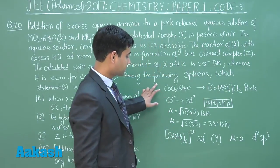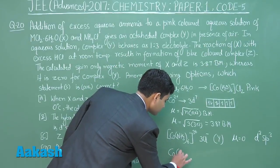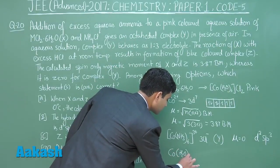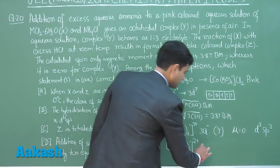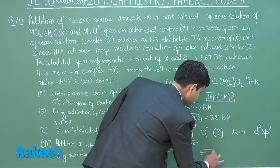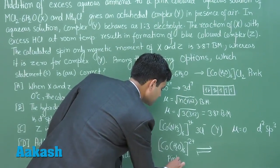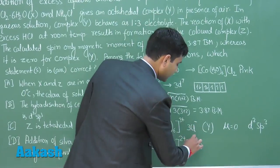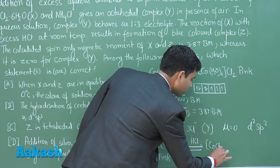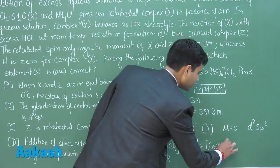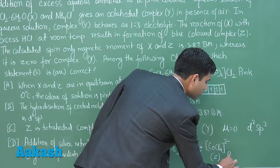The other complex X, which is our pink color complex, if we add excess HCl, it gives [CoCl4]2- which is our Z and it is blue color complex.